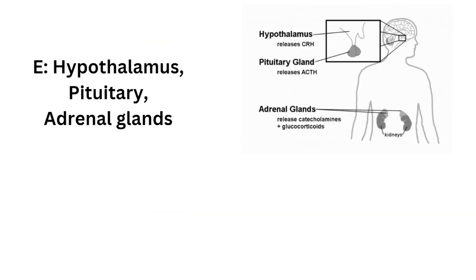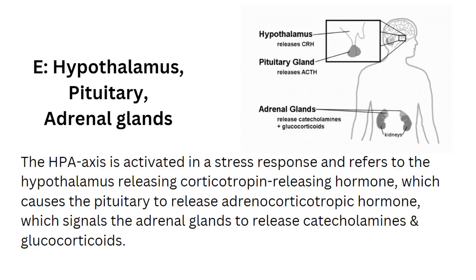And this would be E, hypothalamus, pituitary, adrenal glands. The HPA axis is activated in a stress response, and this refers to the hypothalamus releasing corticotropin-releasing hormone, which causes the pituitary to release adrenocorticotropic hormone, which then signals the adrenal glands to release catecholamines and glucocorticoids.